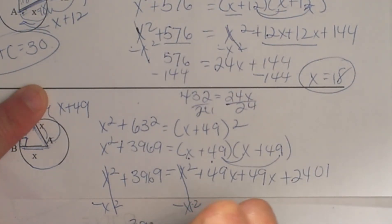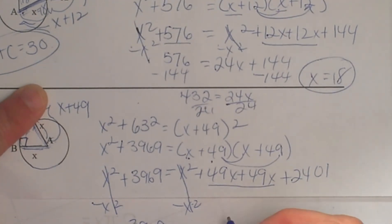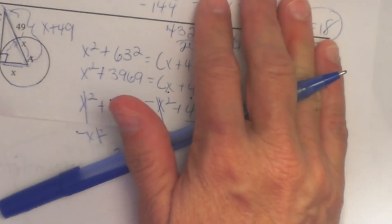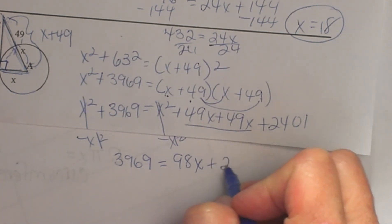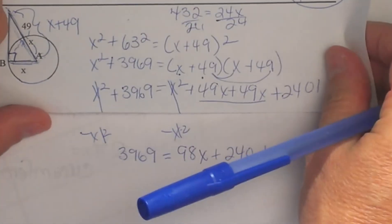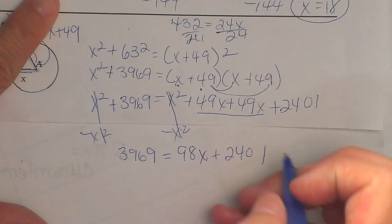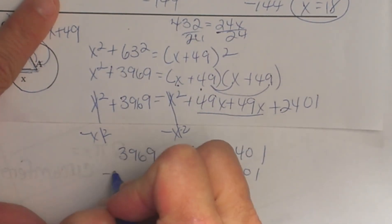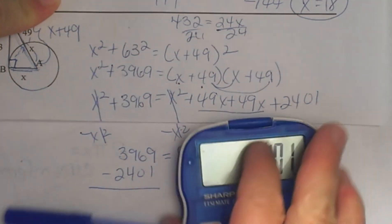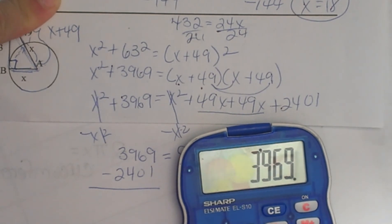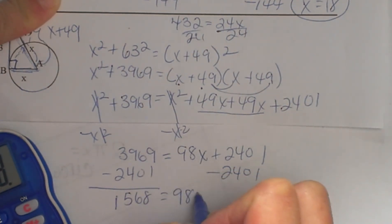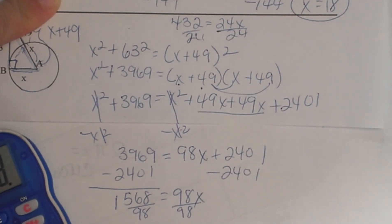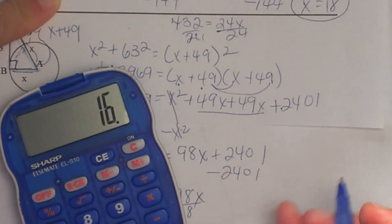That leaves us with 3,969 on the left, and 98x plus 2,401 on the right. Subtract 2,401 from both sides: 3,969 minus 2,401 is 1,568, which equals 98x. Divide both sides by 98, and x equals 16.